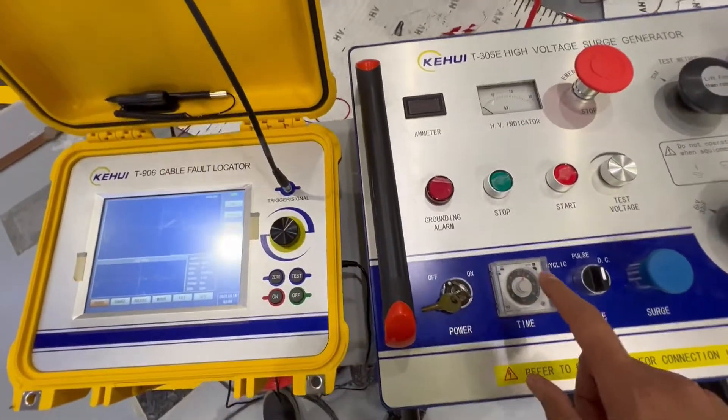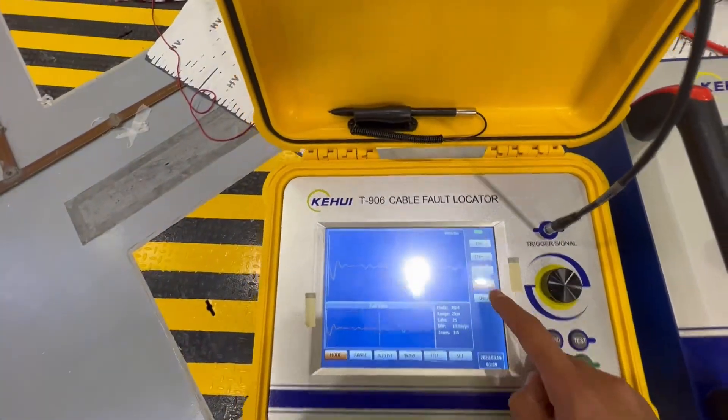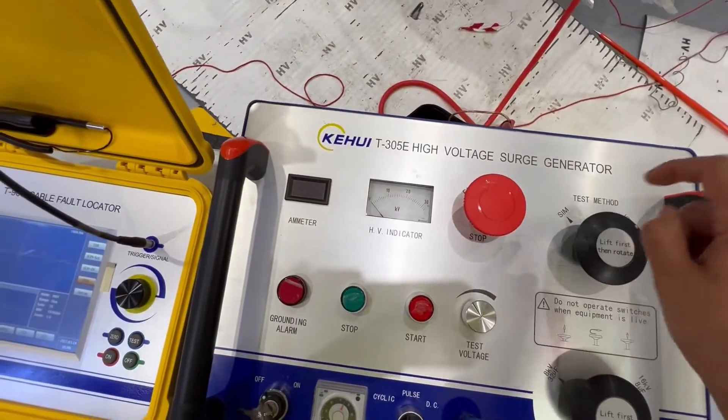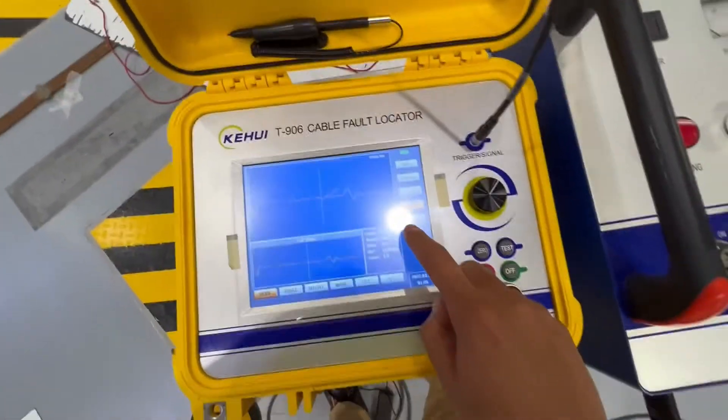You have MIM method, which is multiple impulse method, or we call it as a SIM method. If you are using the surge generator in SIM method, the TDR is to be selected in the MIM method.